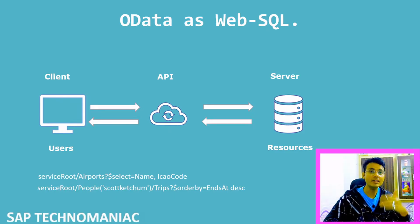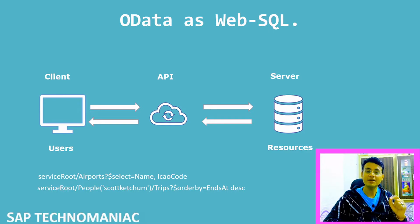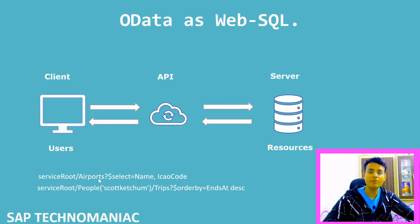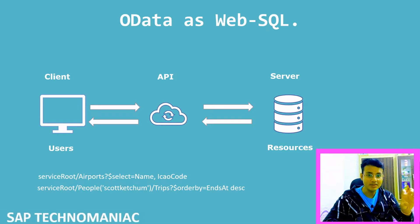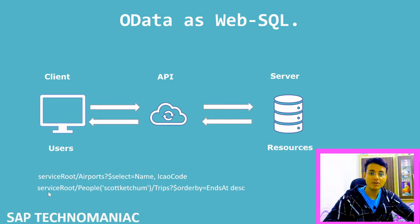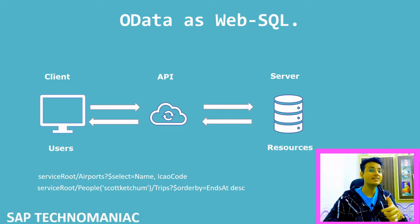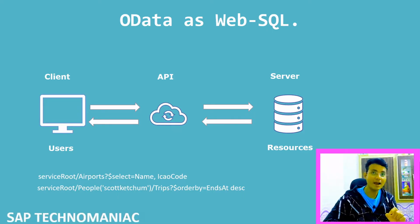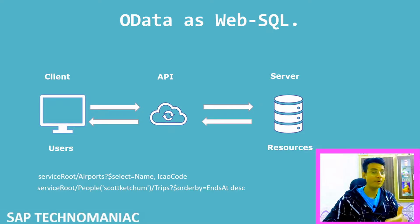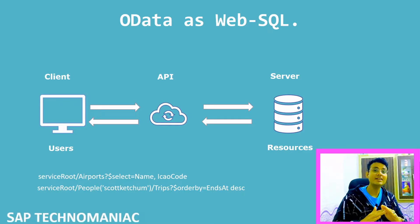If you want to get data over the web from a different database — which is not your company database — you can write queries in your URL using OData. There are some examples. Suppose I want to get one of the entities. We can write a SELECT-like statement — I want to get some data from that particular system based on some WHERE condition or filter condition, which I can pass as part of the URI or URL. Then I can get the data from the different system, if I have access to that data. So in a simpler way, we can understand that OData is a web SQL. We are writing SQL in the form of a URL and getting data from a different server.